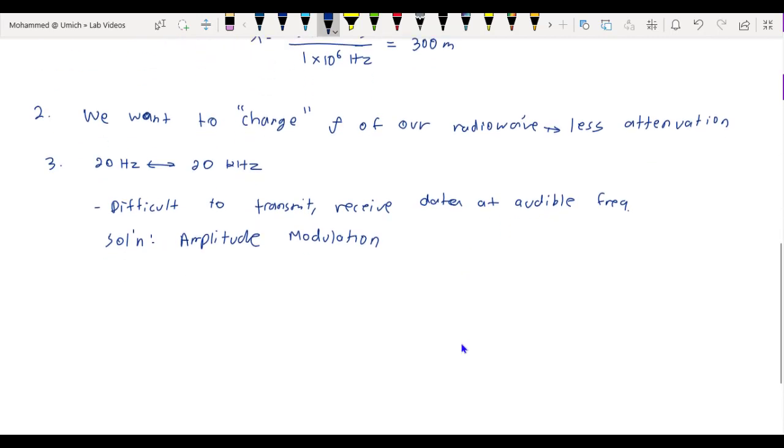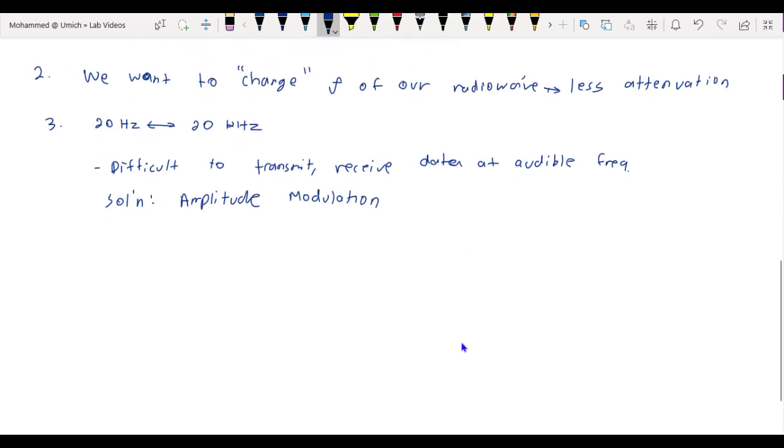And by using amplitude modulation, we can design a transmitter that converts our audio signal into a format that's suitable for long distance communication.